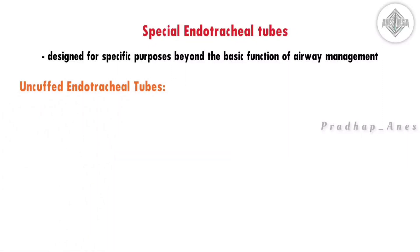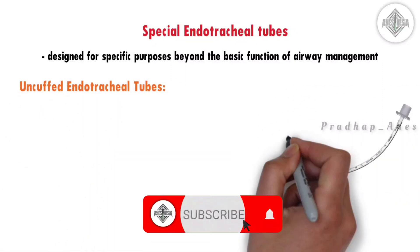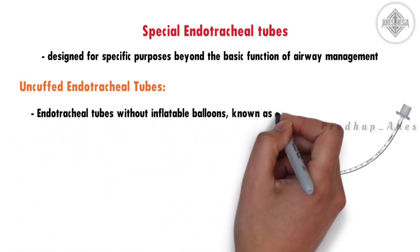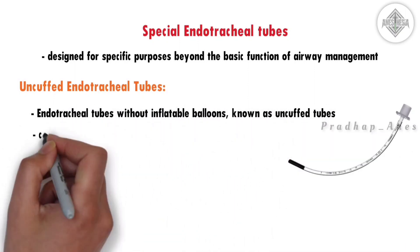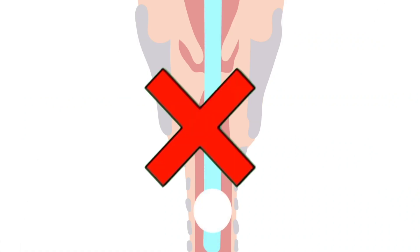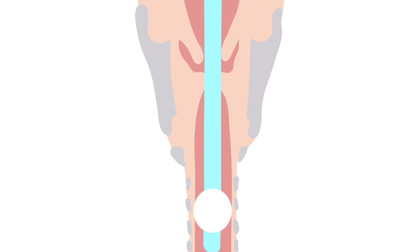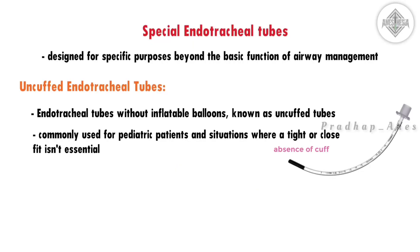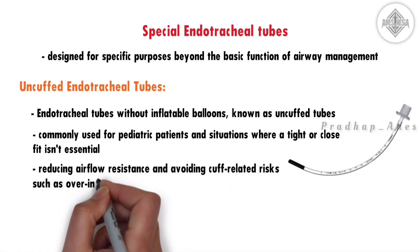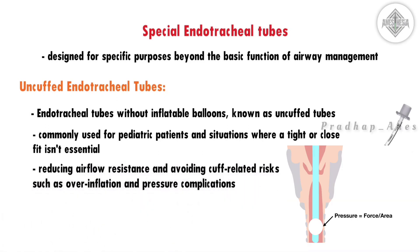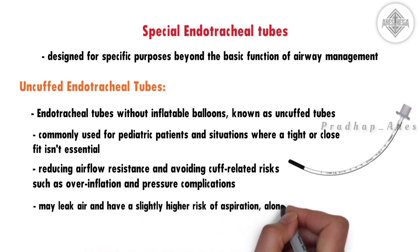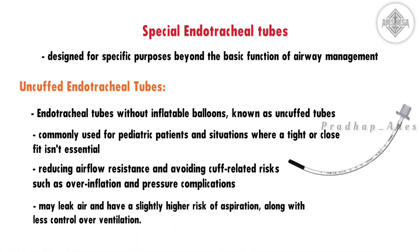Uncuffed endotracheal tubes are tubes without inflatable balloons. These tubes are commonly used for pediatric patients in situations where a tight or close fit isn't essential. They offer easier sizing due to the absence of cuffs, reducing airflow resistance and avoiding cuff-related risks such as overinflation and pressure complications. However, they may leak air and have a slightly higher risk of aspiration, along with less control over ventilation.